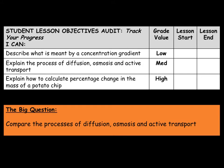We will also look at how to calculate percentage change in the mass of a potato chip. Our big question today is to compare the processes of diffusion, osmosis, and active transport.